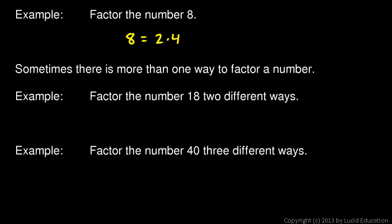Sometimes there is more than one way to factor a number. In this example, we're told to factor the number 18 two different ways. Think of two numbers that multiply to give you 18, and 2 times 9 comes to mind. Then let's do it again. Find two different numbers. 18 could also be written as 3 times 6.